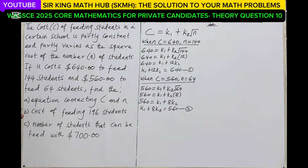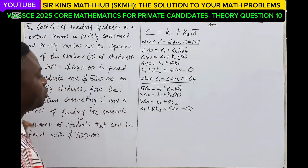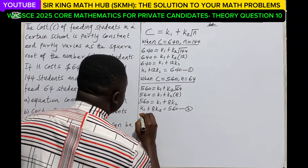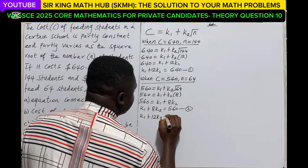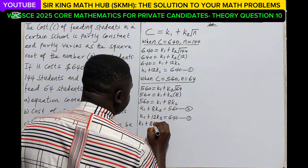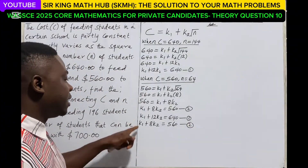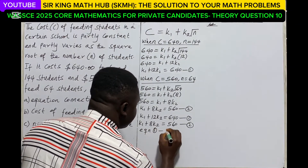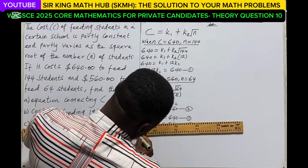Now we have to find the equation connecting C and N. To do that, we need to find the values of K1 and K2 by solving the two equations simultaneously. Equation 1: K1 plus 12K2 equals 640. Equation 2: K1 plus 8K2 equals 560. Using the elimination method, we subtract equation 2 from equation 1 to eliminate K1.